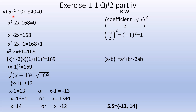The completing square method: the first step is that the x² coefficient is 5. So we divide every term by 5 — the total term divided by the x² coefficient, which is 5.